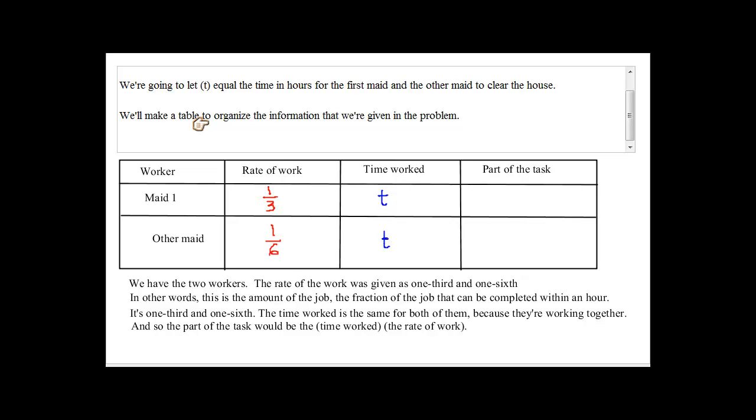Now, part of the task, part of the task here, part of the task would be the time that they worked multiplied by the rate of their work. So Sunit, what would be the part of the task for the first worker here? One over three t? Exactly. So that would be one-third times t. Ryan, what would be the part of the task for the second worker here? One-sixth times t. Exactly. One over six times t.